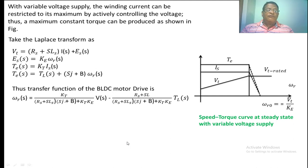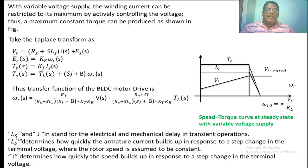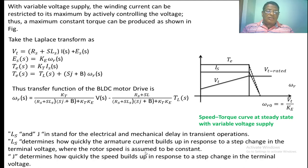Now we will find the transfer function of the BLDC motor. Starting from the voltage equation, back-EMF equation, torque equation, and load torque expression, we take the Laplace transform of all four equations. The relation between speed, torque, and input voltage gives the transfer function of the BLDC motor, involving LS (stator inductance) and J (inertia). Stator inductance determines how quickly the armature current reaches steady state for a step change in voltage at constant speed. J determines how quickly the speed reaches steady state for a step change in terminal voltage.